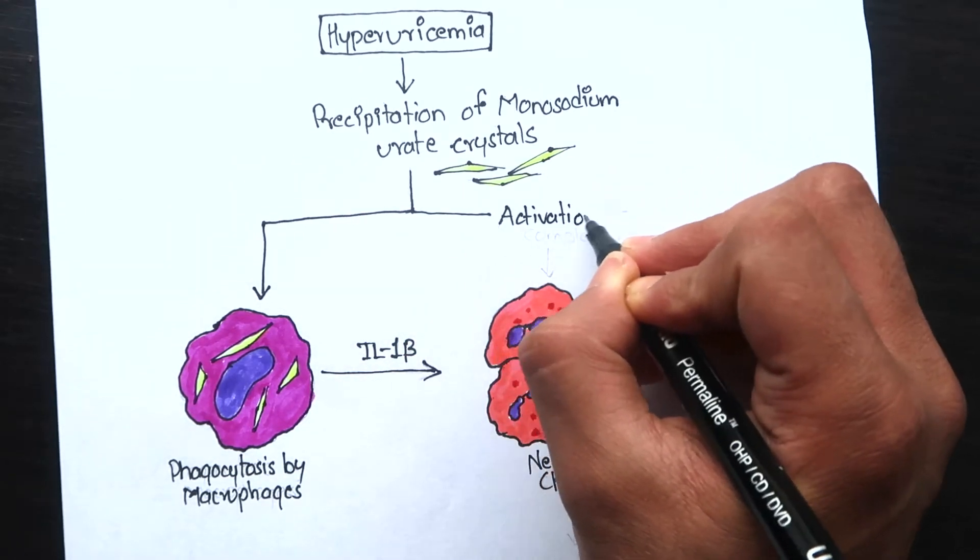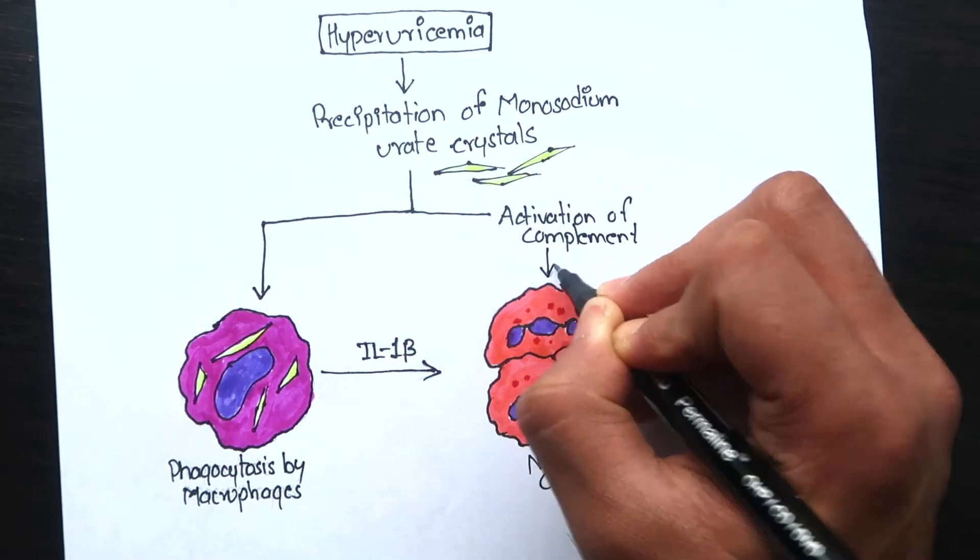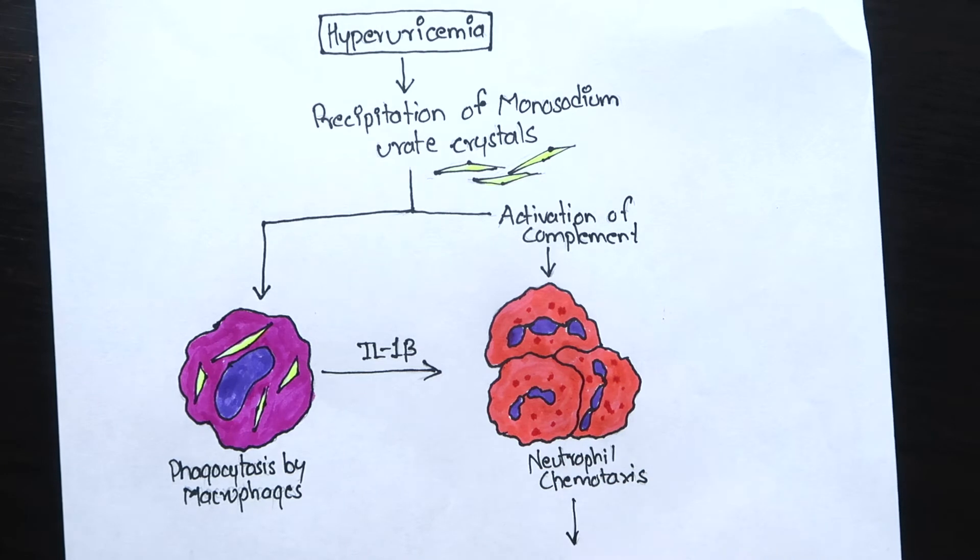The uric crystals in the joint can also activate the complement system leading to the generation of chemotactic complement products.